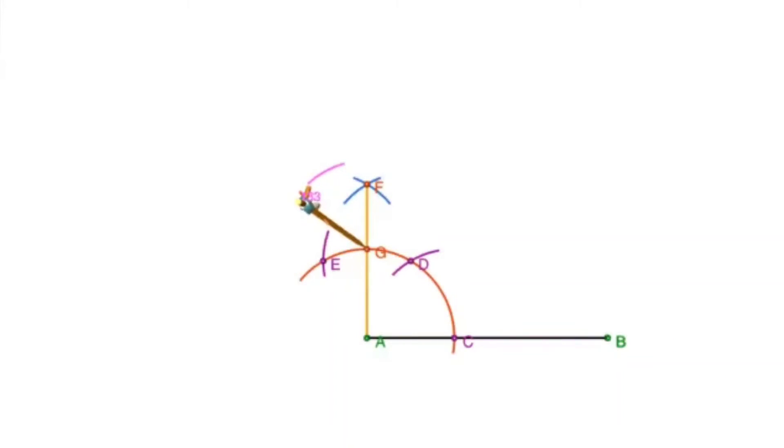So for that with G as center I make an arc. With E as center and the same radius, I make another arc to intersect the previous arc at point H. I join A to H and produce it to point I.